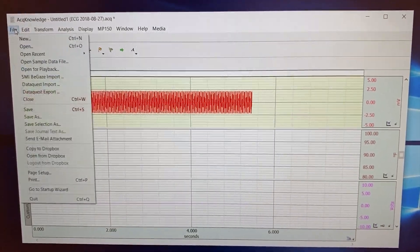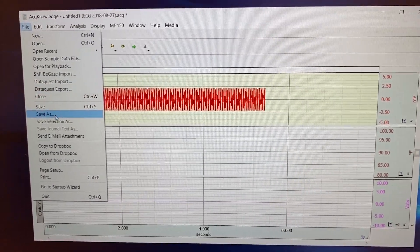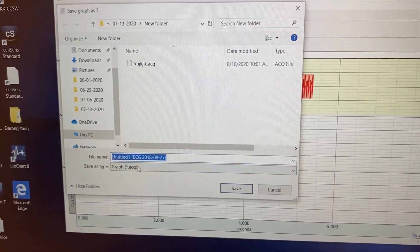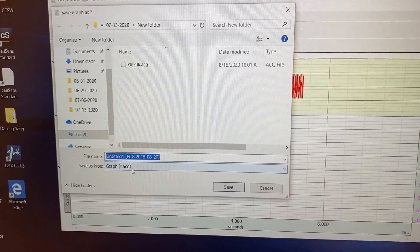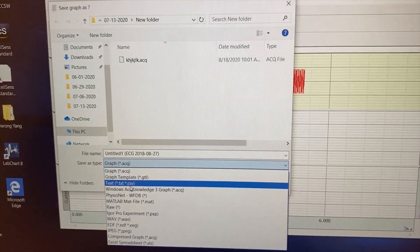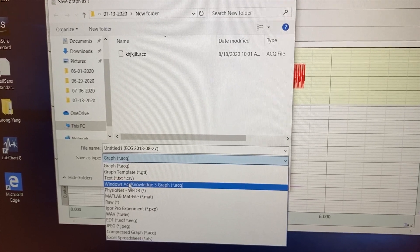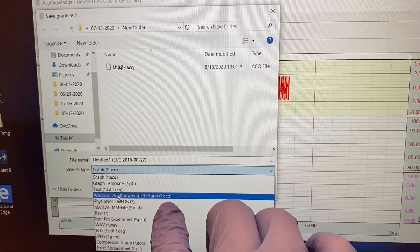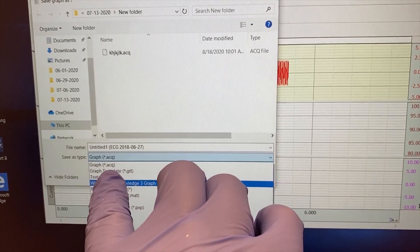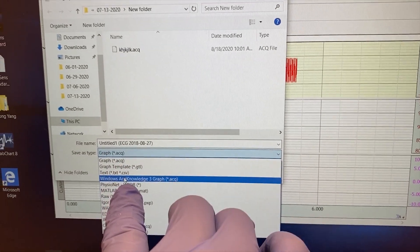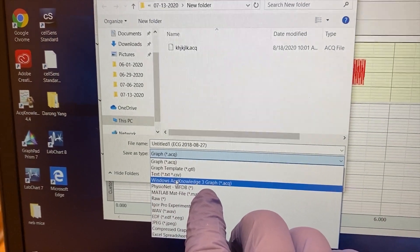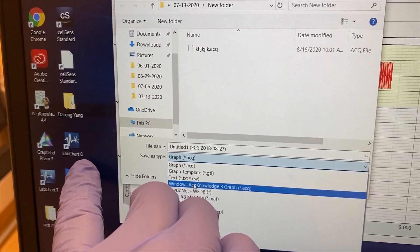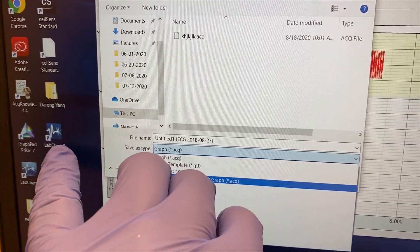Here use file save as. Here is a very important thing. It's to select the file type. You must select the Windows Acknowledge 3 Graphy. So you can see here the ACP and the ACP the same, but different. If you use the Windows Acknowledge this file type, you can analyze it using the LabChart. If not, you cannot open in LabChart.